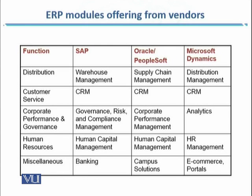If you talk about customer service, all three vendors offer CRM, which is Customer Relationship Management. In the case of corporate performance and governance, the ERP module offered by SAP is Governance, Risk and Compliance Management. For Oracle, it is Corporate Performance Management, and for Microsoft Dynamics, it is Analytics.